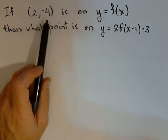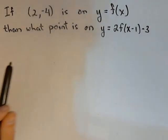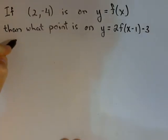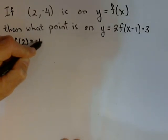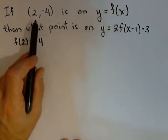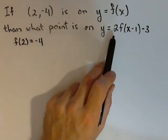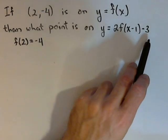What we know is the point (2, -4) is on the graph of y = f(x), or we could say f(2) = -4. What we want to do is find the corresponding point that's on y = 2f(x-1) - 3.